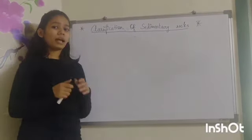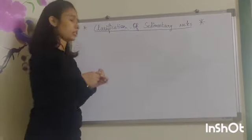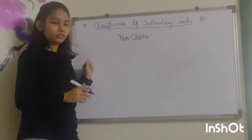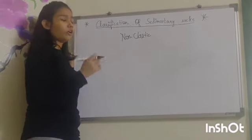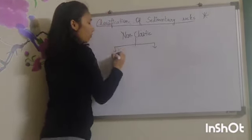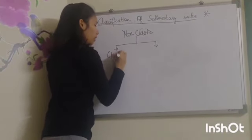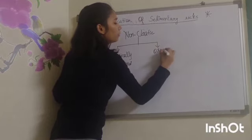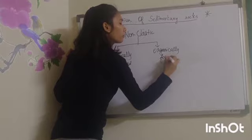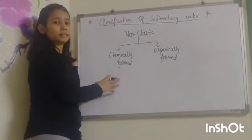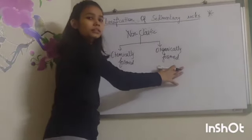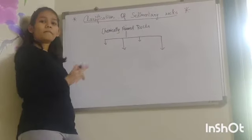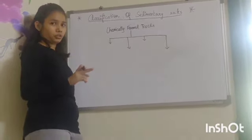Now we have learnt about plastic sedimentary rocks and their classification. Let us move on to the second type: non-plastic sedimentary rocks. Non-plastic sedimentary rocks are formed by various chemical or organic processes. On the basis of method of formation, these rocks are divided into two subcategories: first is chemically formed rocks, and second is organically formed rocks. Chemically formed rocks are formed due to precipitation of mineral matter in solution, while organically formed rocks contain mainly dead and decaying plants and animals.